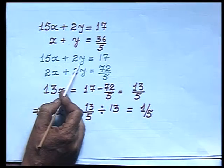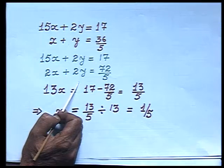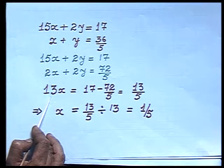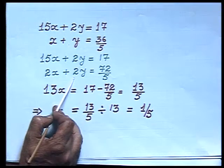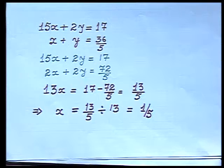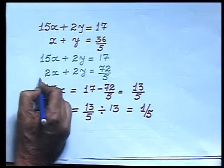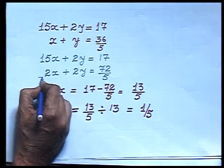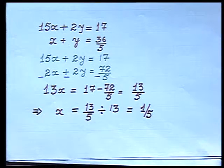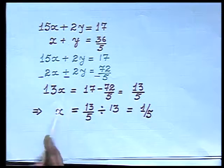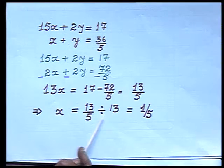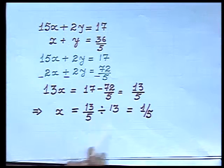The first equation remains 15x plus 2y equals 17. Multiplying the second equation by 2 gives 2x plus 2y equals 72/5. To get rid of y, I subtract these two equations: 15x minus 2x gives 13x, and 2y minus 2y gives 0. So 13x equals 17 minus 72/5, giving 13x equals 13/5, and therefore x equals 1/5.